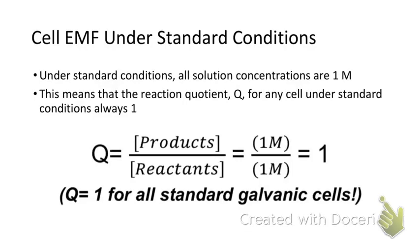In this video we're going to be looking at what happens to the voltage of a voltaic cell under non-standard conditions. In order to do that we need to look first at what the standard conditions are. Standard conditions for any voltaic cell are when all of the concentrations of all the solutions are one molar. If this is the case then if we calculate Q, the reaction quotient for any cell, the concentration of products over the concentration of the reactants is always going to be one because all of the concentrations are one.